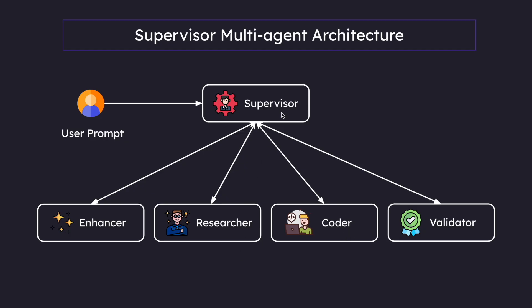If there is a particular problem that requires some code to be written, the supervisor can hand off control to the coder agent. The coder agent can actually use a tool that will execute code and take the output. Finally, we have the validator agent. Right before ending this workflow, the validator agent checks if the user's question and the final answer are actually relevant.